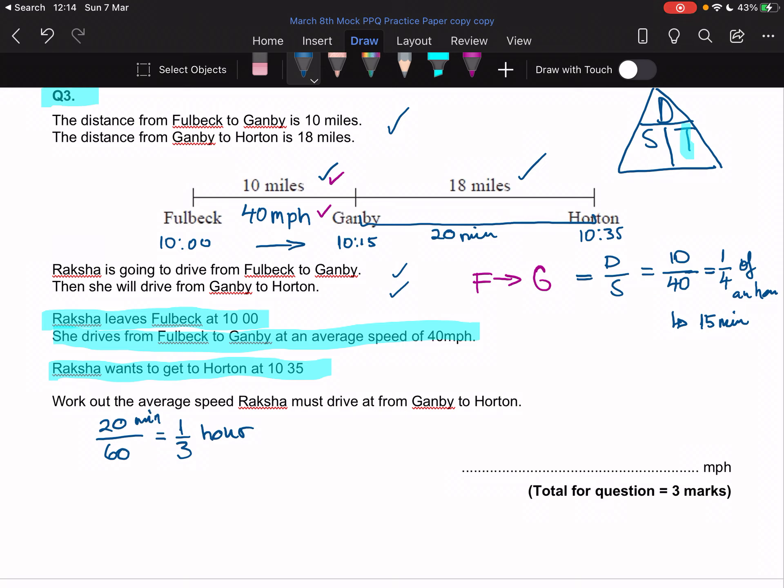Now let's think about what we're doing here. We have our time and our distance. We're going to work out the speed that she drives at between Gamby and Horton, because that's what we've got information for.